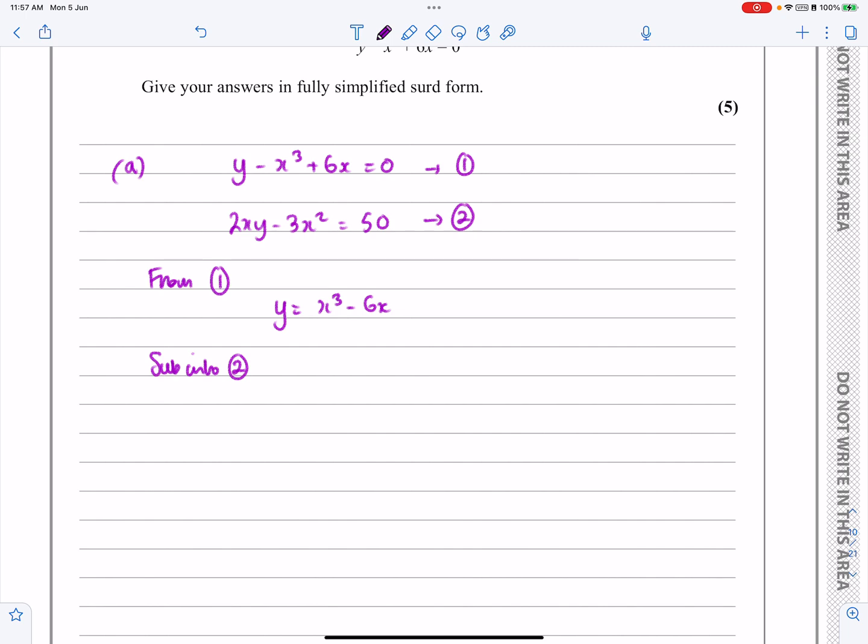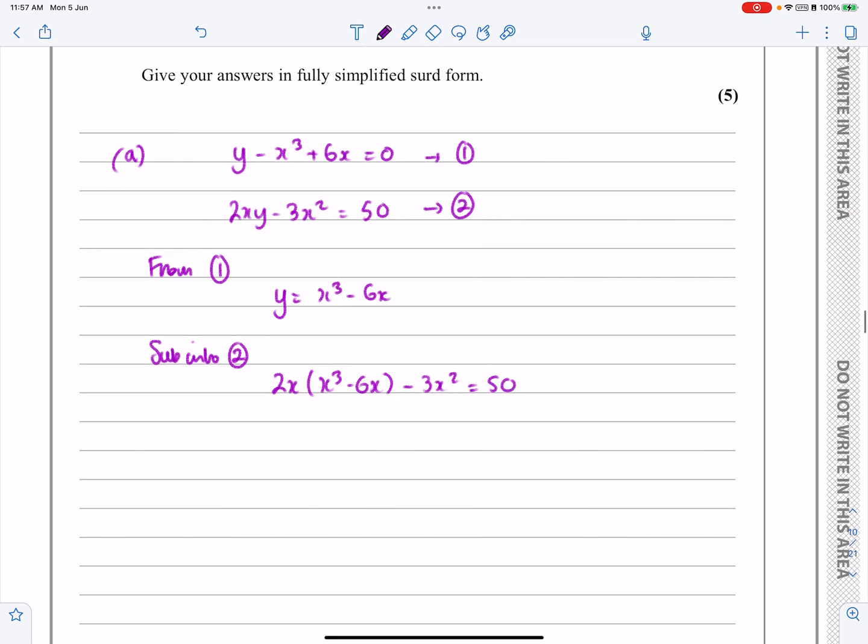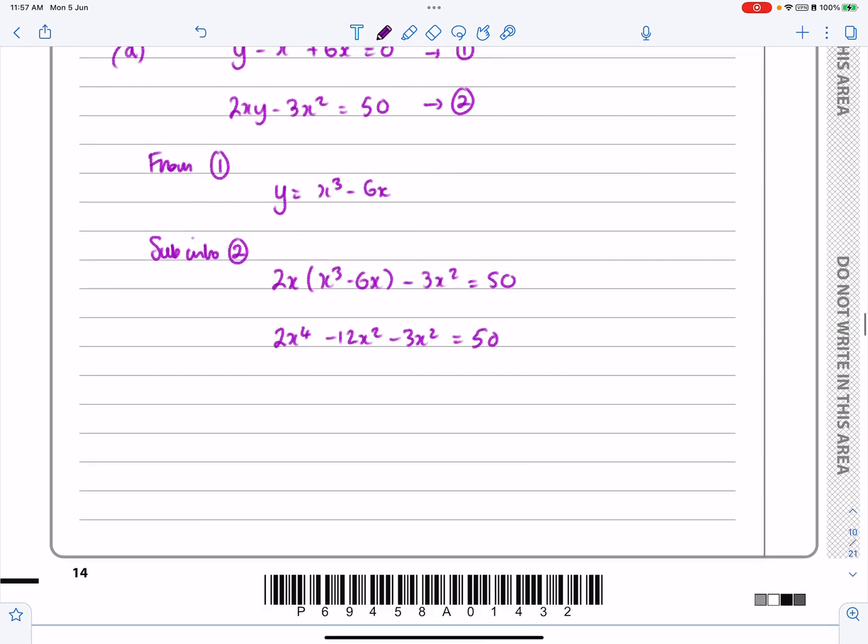So in equation 2, I've got 2xy, which is now 2x times x cubed minus 6x, minus 3x squared equals 50. Okay, let's multiply everything out, 2x to the 4, minus 12x squared, minus 3x squared is equal to 50.